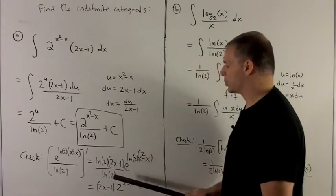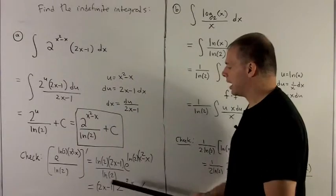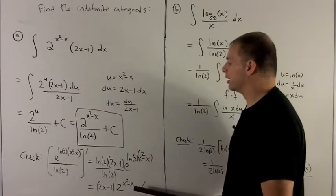The natural log of 2s go away. This collapses back into 2 to the x squared minus x. And then I have my integrand, as promised.